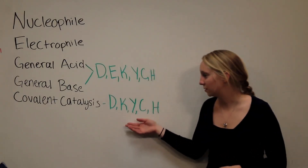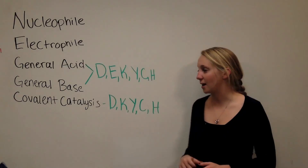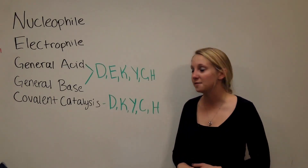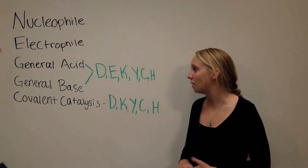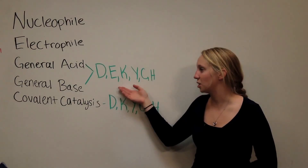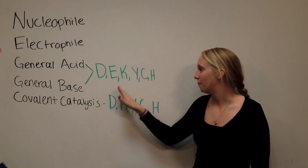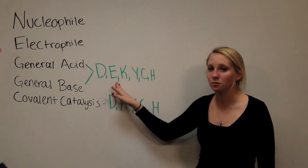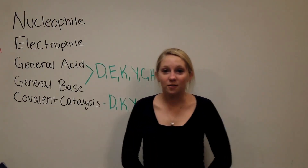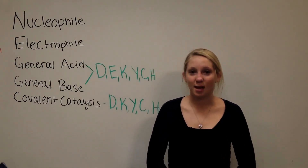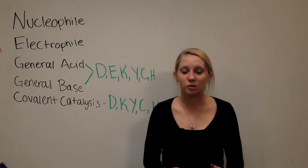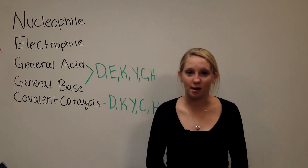Here are the residues listed that are able to act in covalent catalysis. If you'll notice, those are all the same residues that can act as a general acid or general base, minus, of course, glutamate. The final thing I want to go over before we get into the steps of the mechanism is what chymotrypsin actually does.